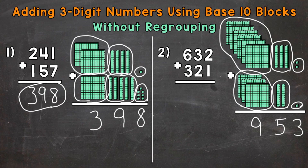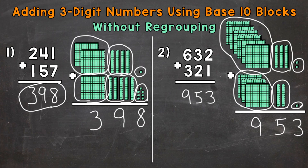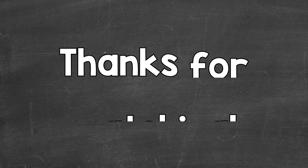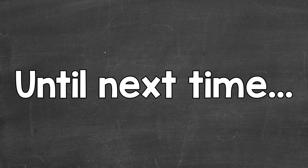To recap: 2 ones plus 1 one equals 3 ones. Then 3 tens or 30 plus 2 tens or 20 gives us 5 tens with a value of 50. And lastly, 6 groups of 100 plus 3 groups of 100, or 600 plus 300, gives us a 9 in the hundreds place with a value of 900. So the final answer is 953. That's how you add 3-digit numbers using base 10 blocks. I hope that helped — thanks so much for watching. Until next time, peace.